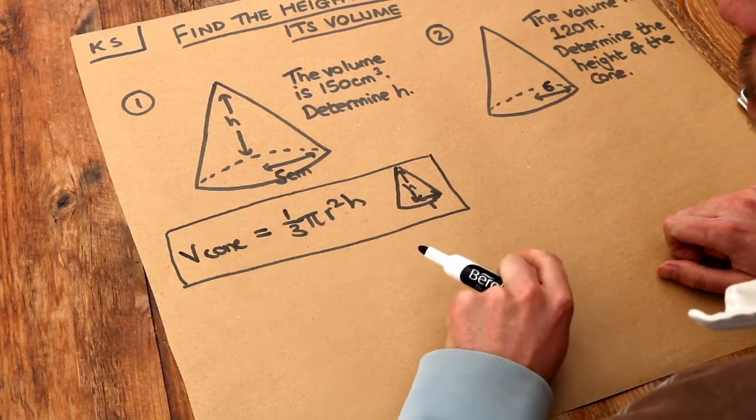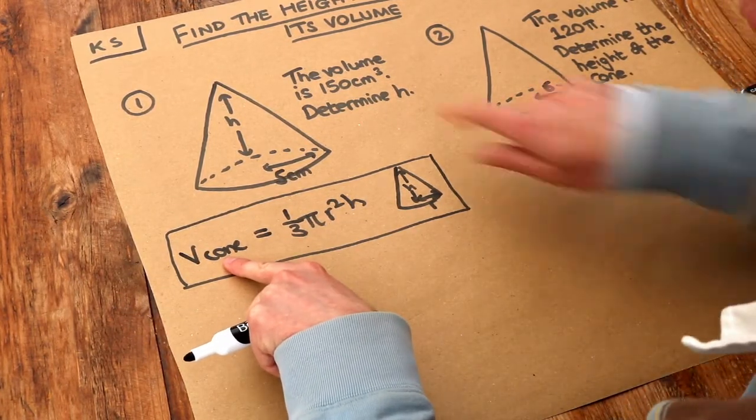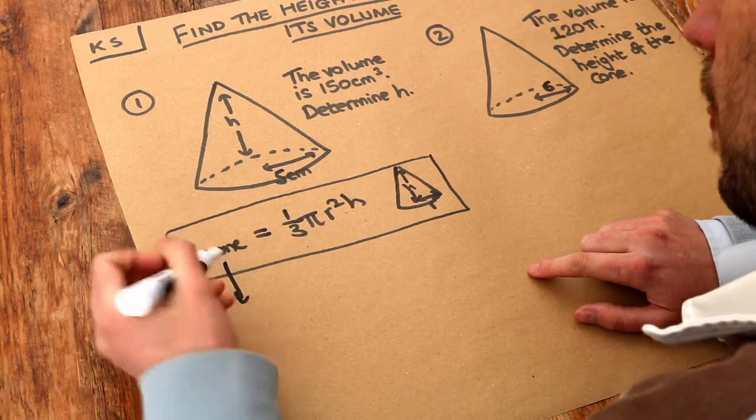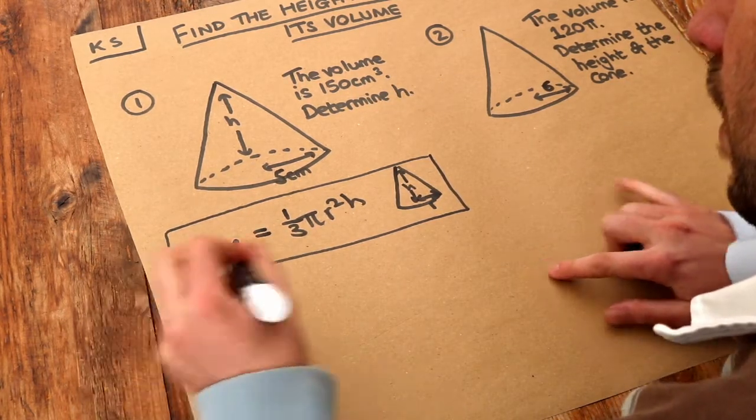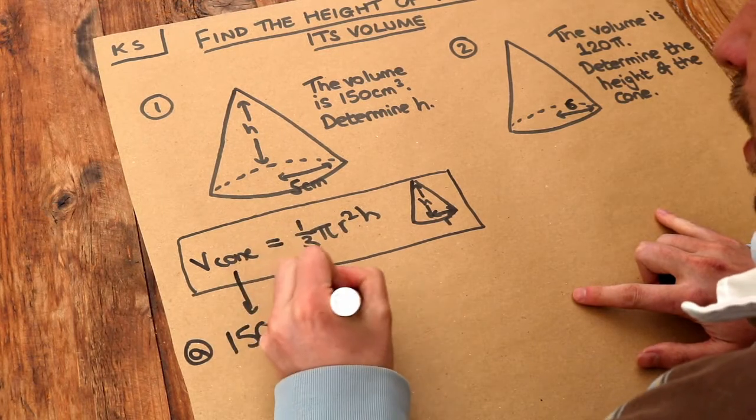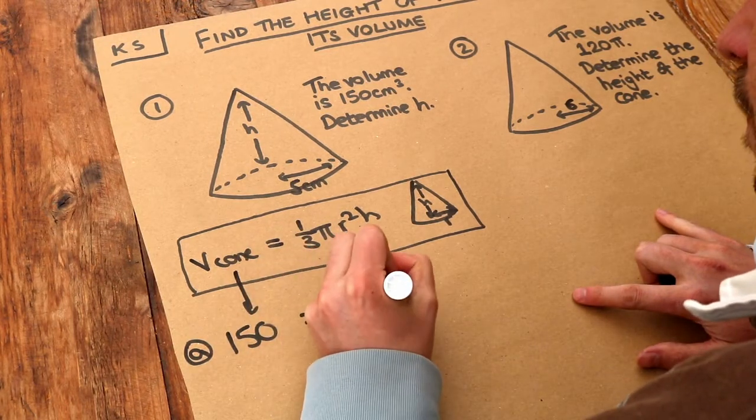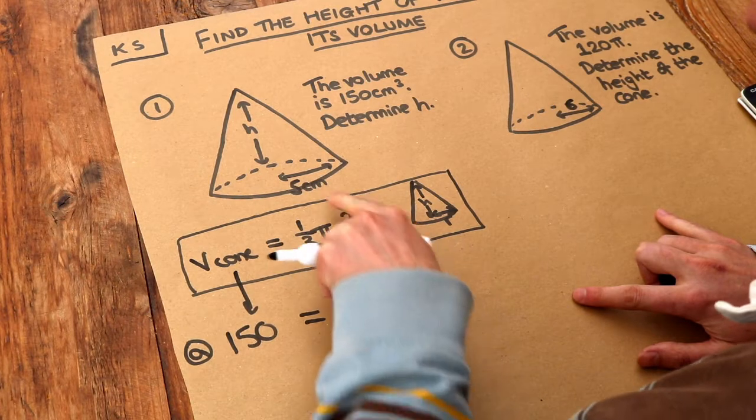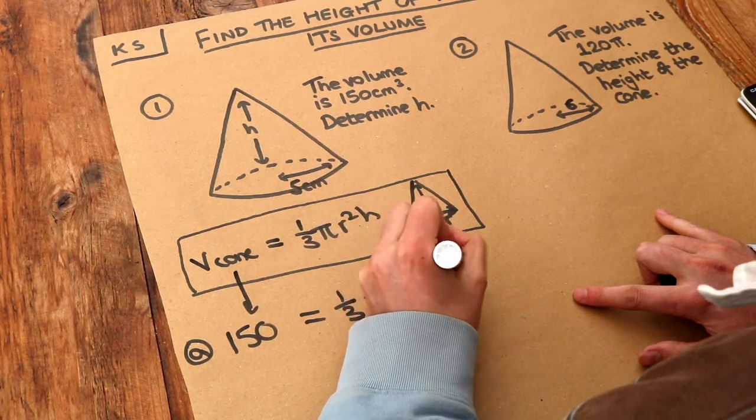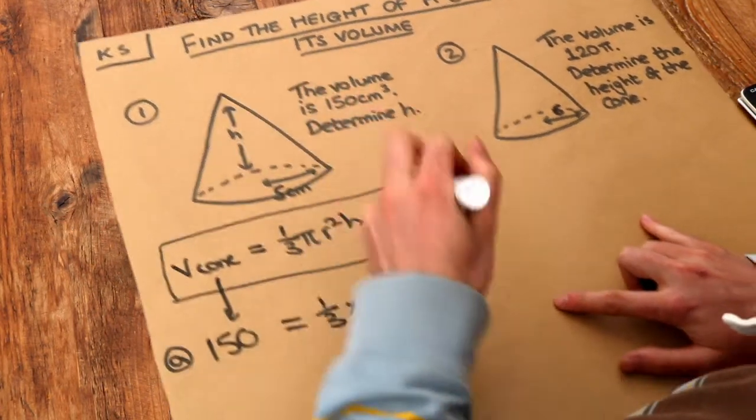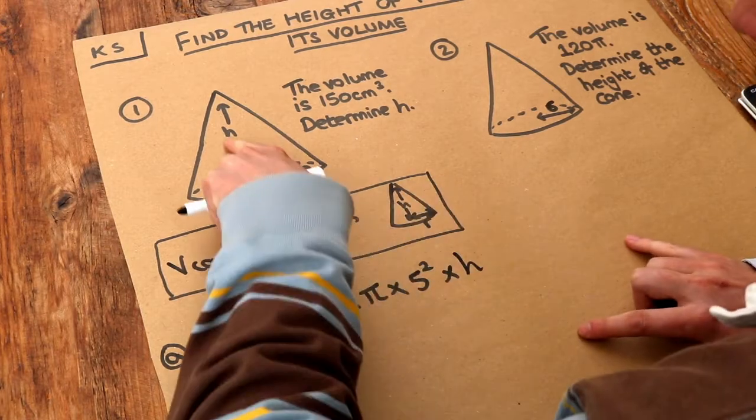But still it's just a case of substituting into this formula. So we're given the volume of the cone this time, it's 150, equals a third times pi multiplied by the radius squared, which is five squared, multiplied by the height, which we don't know, so let's call it h.